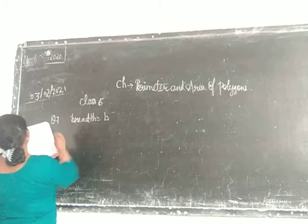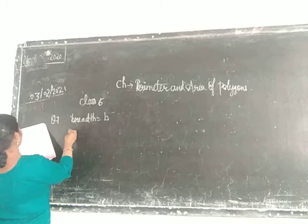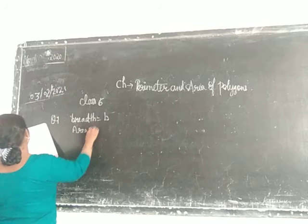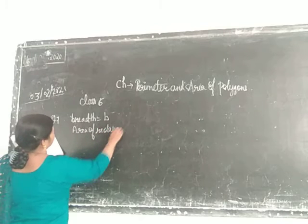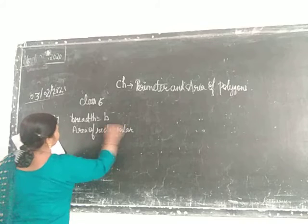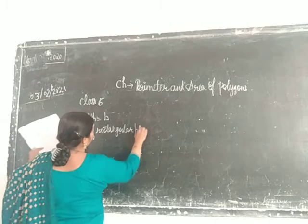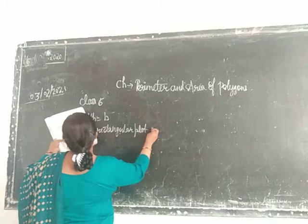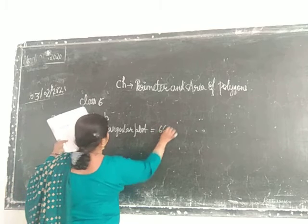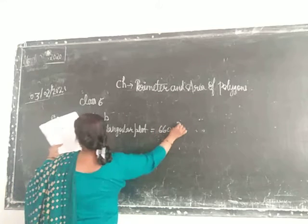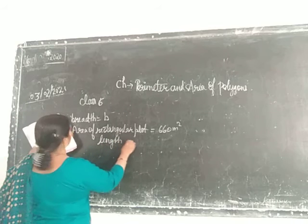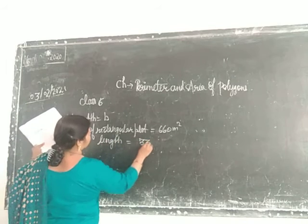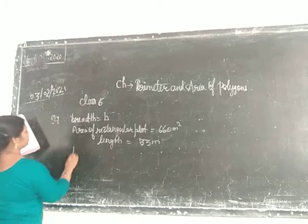Let the breadth equal B. The area has given, area of a rectangular plot is equal to 660 meter square and length also given, length is equal to 33 meter. Find the perimeter.